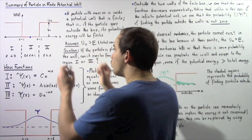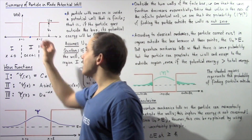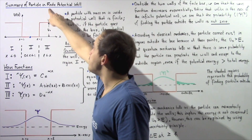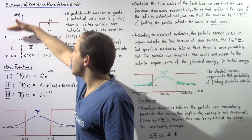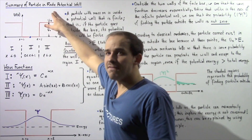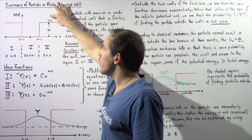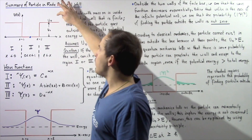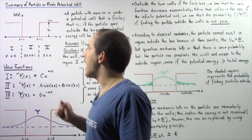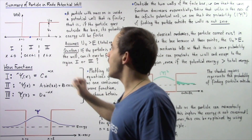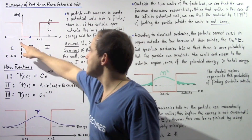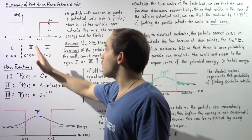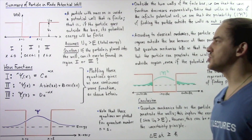The potential well is a box and the box has two walls — the left wall and the right wall. The finite quantity simply means that the height of our two walls is finite and equal to u0, where u0 represents the potential energy that any particle would have if found outside the potential well. The left side of the box is at position x equals 0 and the right wall is at position x equals L.